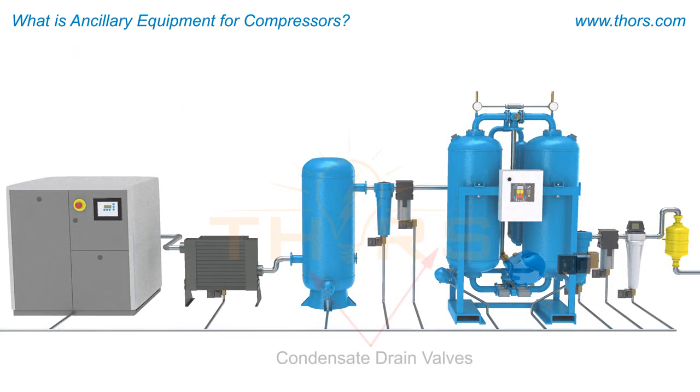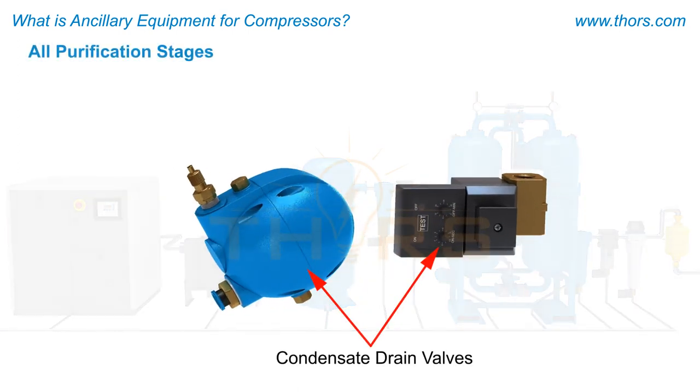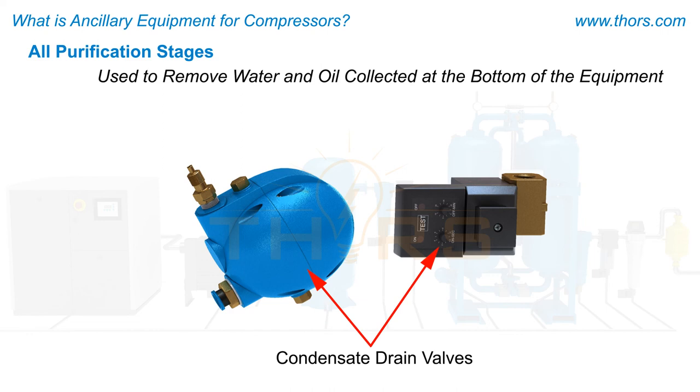Condensate drain valves are used in all stages to remove liquids such as water and oil collected at the bottom of the ancillary equipment.